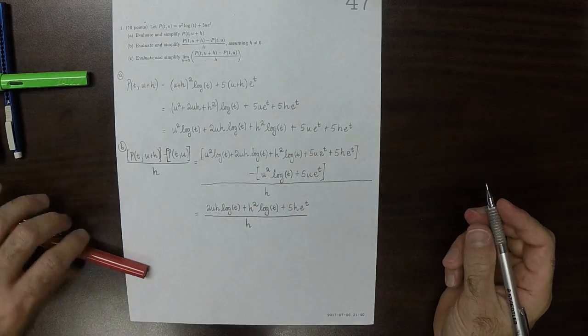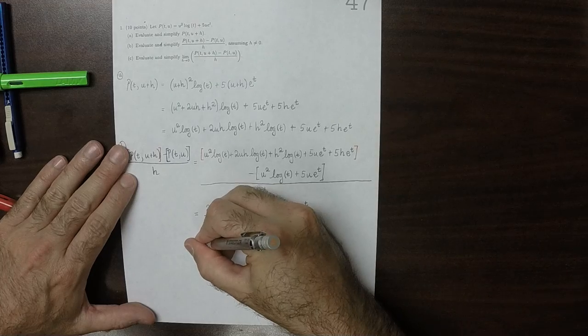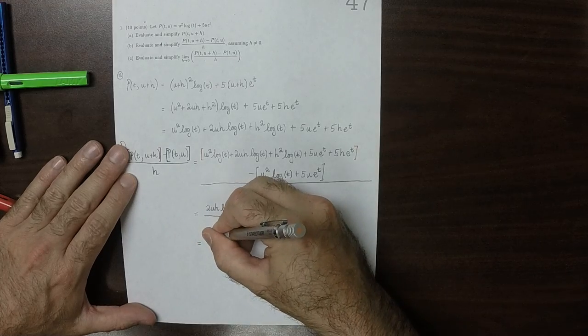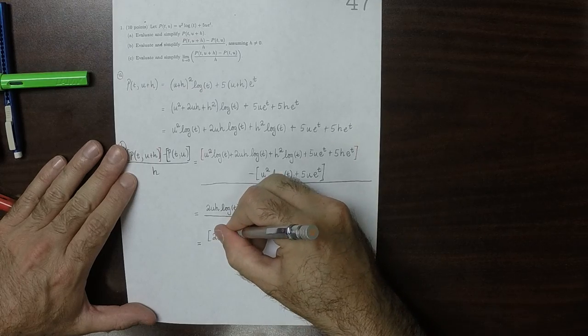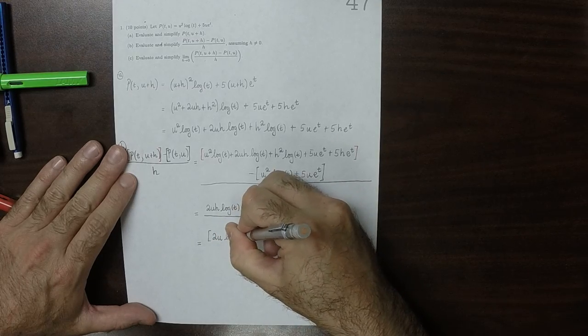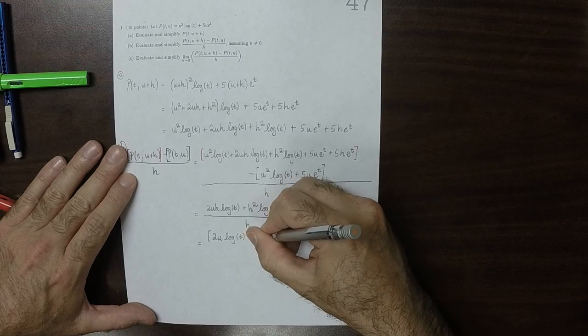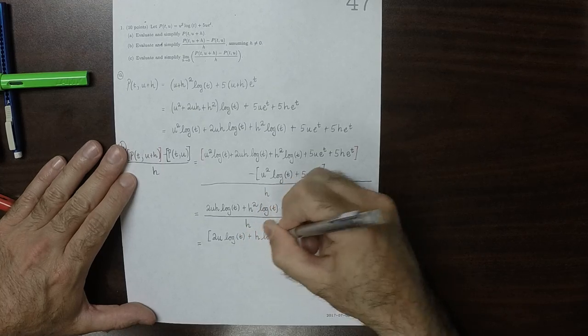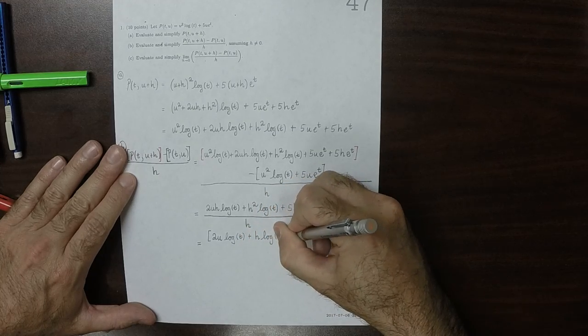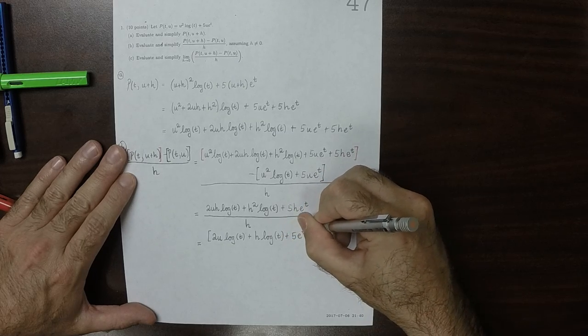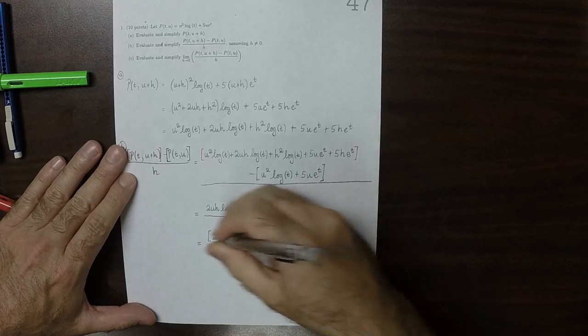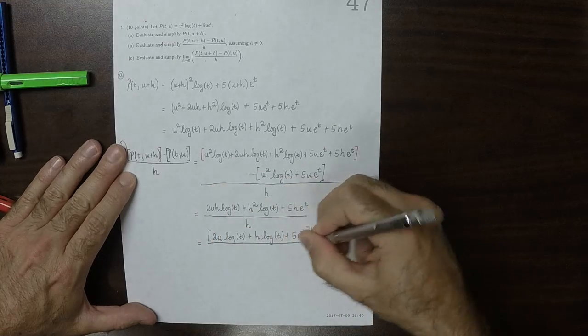Now all of those terms in the numerator have an h, so I'll factor out an h to obtain 2u log t plus h log t plus 5 exponential t with h factored out on the right. And then all of that over h.